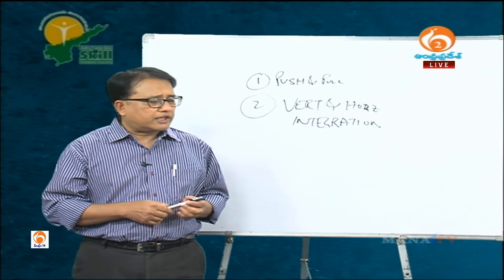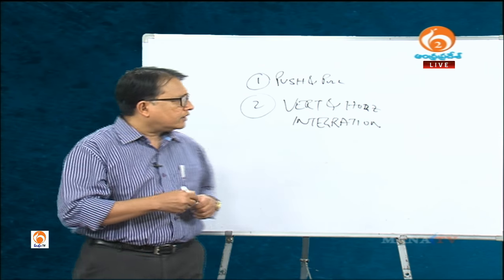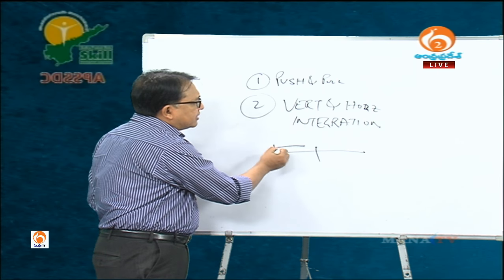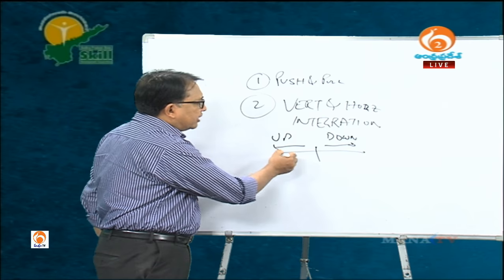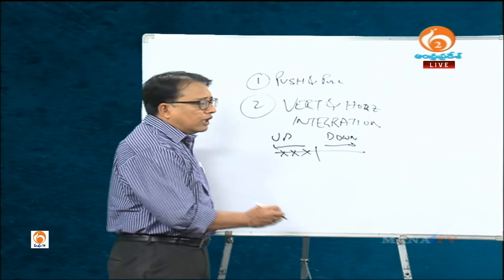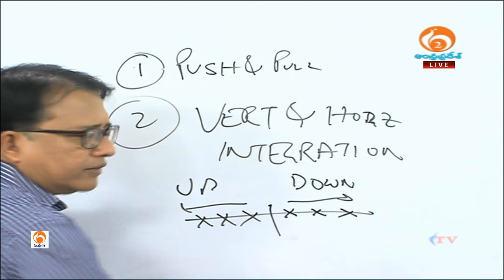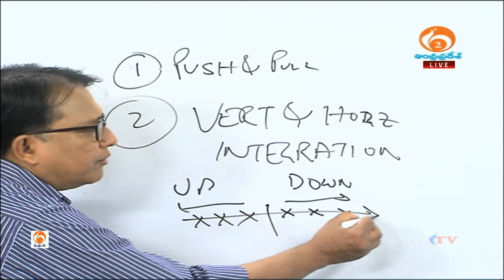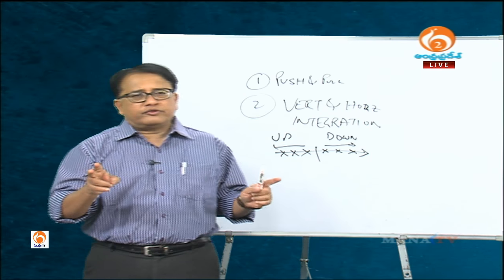Coming back to vertical integration, we also discussed the two phases of vertical integration: one is up the supply chain and one is down the supply chain. In the upward direction, vertical integration takes control of the suppliers. In the downward direction, a company can also take control of distribution — that is its retailers and distributors, which is basically the marketing process. These are the two subdivisions of vertical integration.